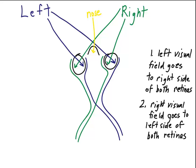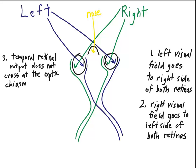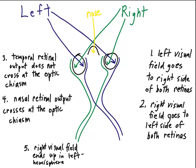So, based on these, we can make a few more observations. One would be that the temporal retina output does not cross at the optic chiasm. However, nasal retina output crosses at the optic chiasm. And putting these things together, then, it's easy to see that the right visual field will end up in the left hemisphere, and that the left visual field will end up being processed in the right hemisphere.